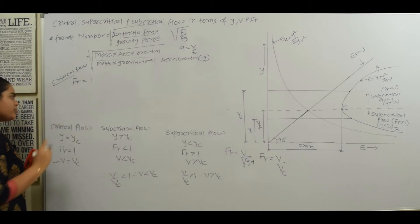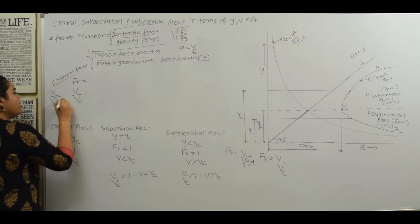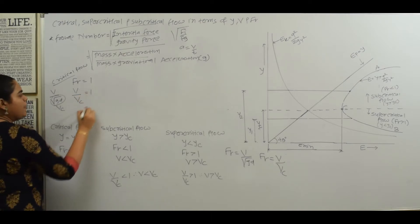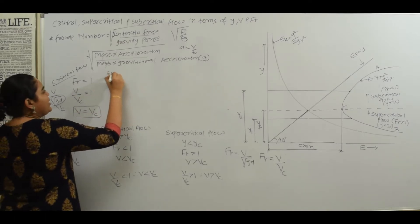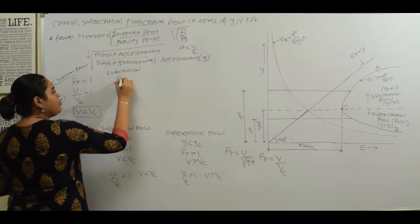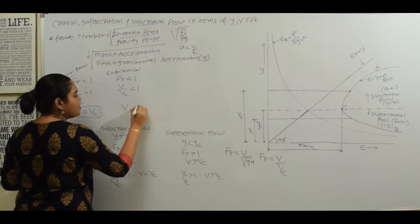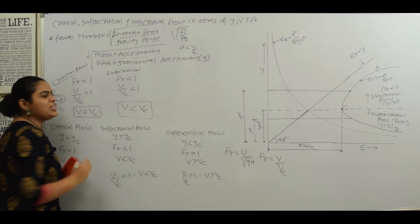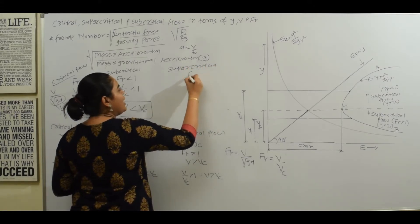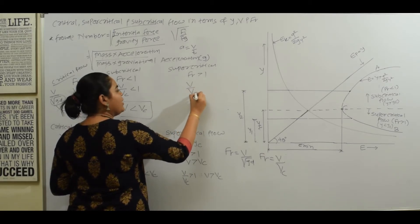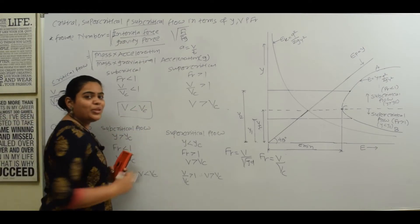For critical flow, Fr = 1, meaning V/Vc = 1, so V equals Vc. For subcritical flow, the Froude number is less than 1, meaning V/Vc < 1, so V is less than Vc. For supercritical flow, the Froude number is greater than 1, meaning V/Vc > 1, so V is greater than Vc.